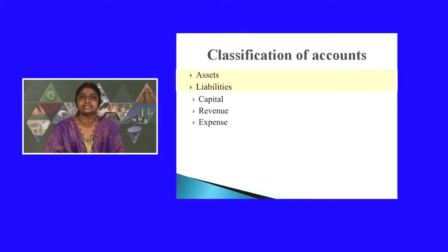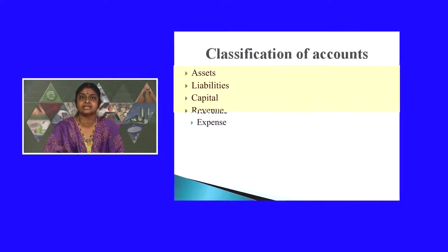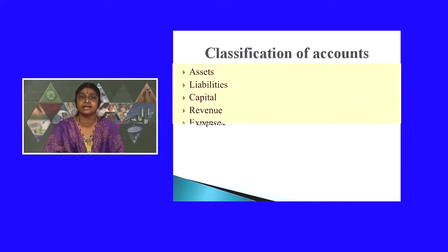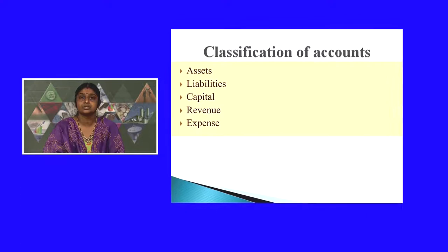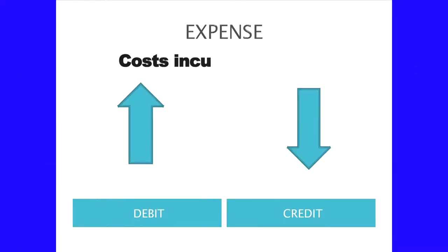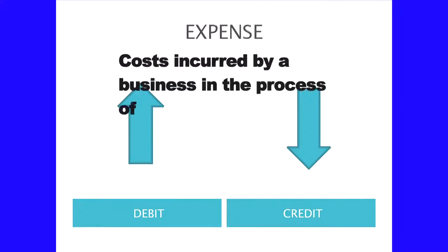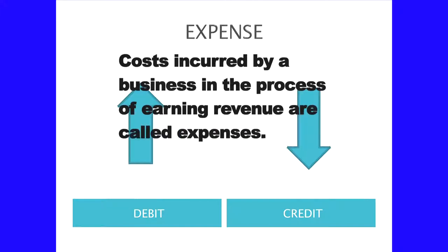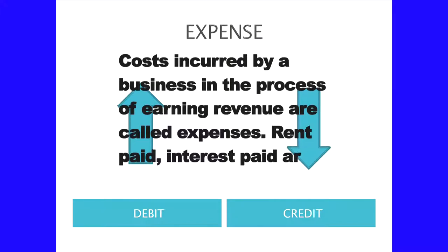At this point of time, you should know what are the assets, liabilities, capital, revenue, and expense. So let us study that. Costs incurred by a business in the process of earning revenue are known as expenses. Rent paid can be said as an expense; interest paid is an expense.